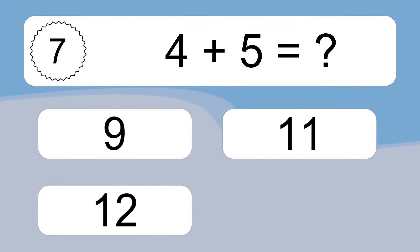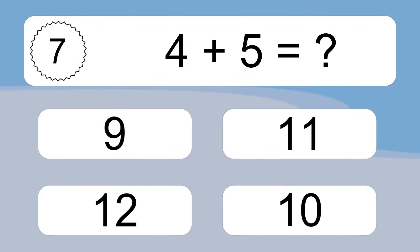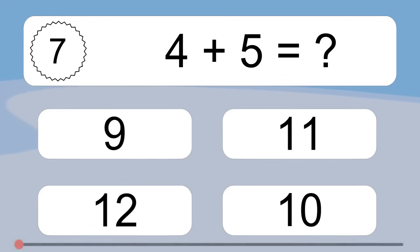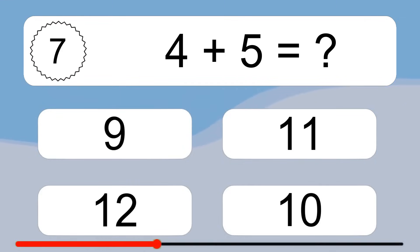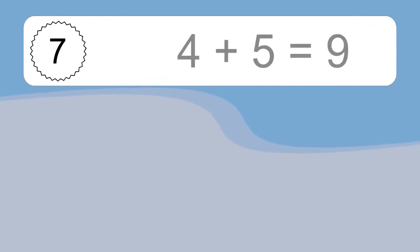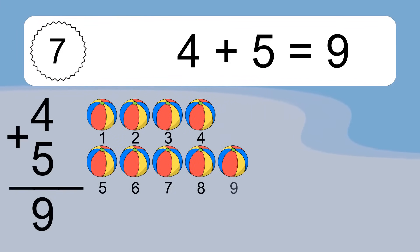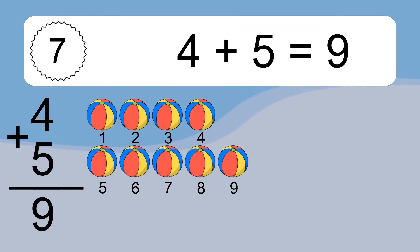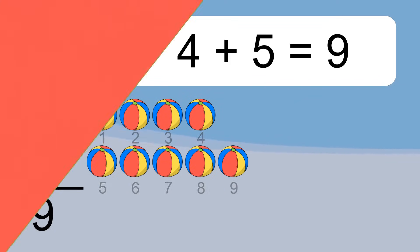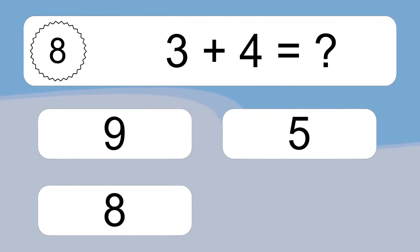4 plus 5 equals 9. Let's count it. 1, 2, 3, 4, 5, 6, 7. 3 plus 4 equals what?